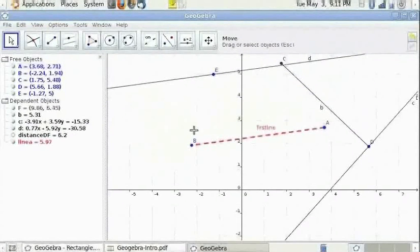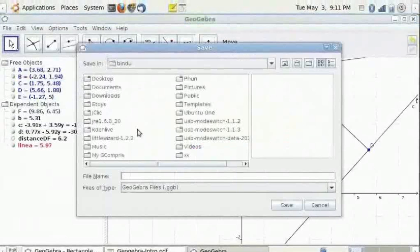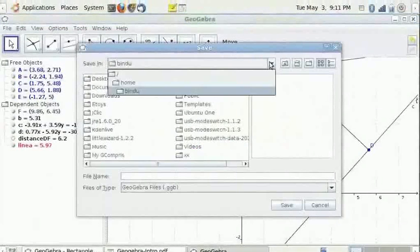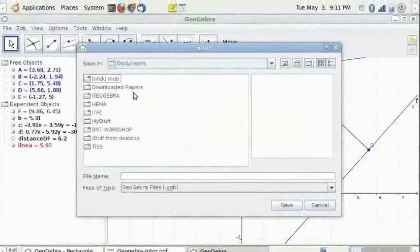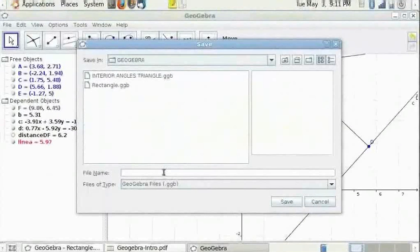To save the file, select the item file. Select save as. Select the folder. I will go to Documents, GeoGebra. Enter the file name and click Save.